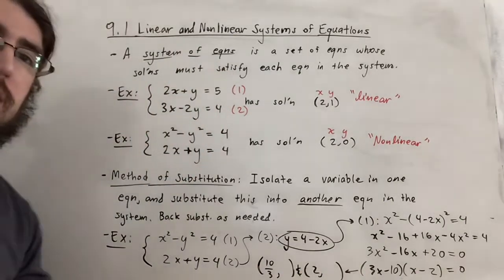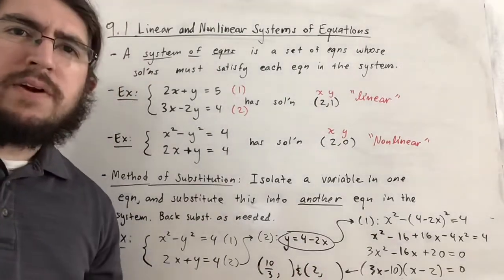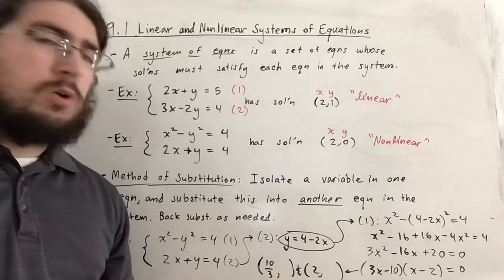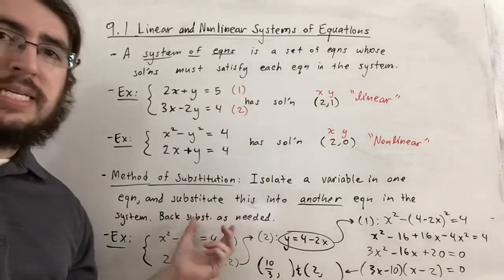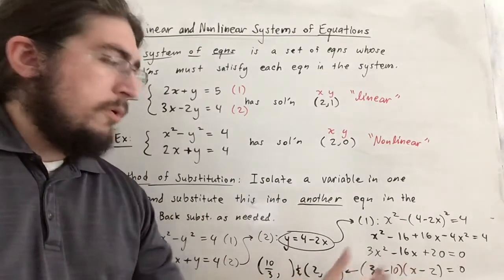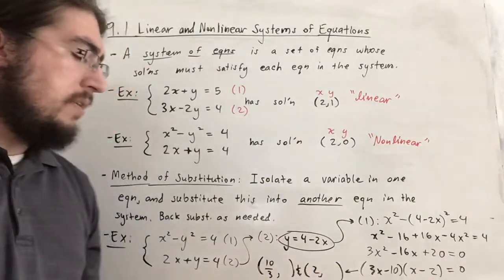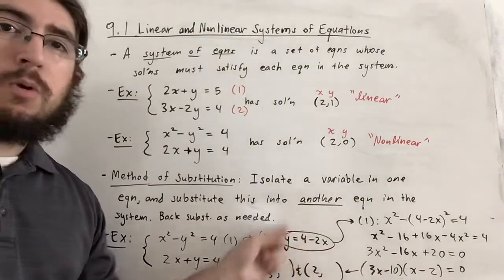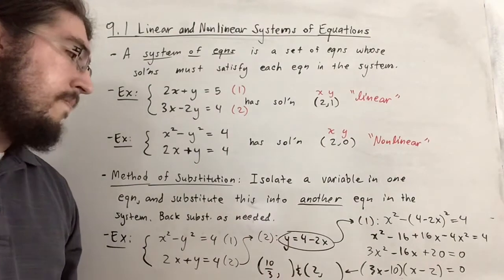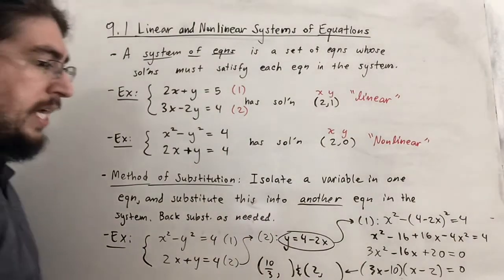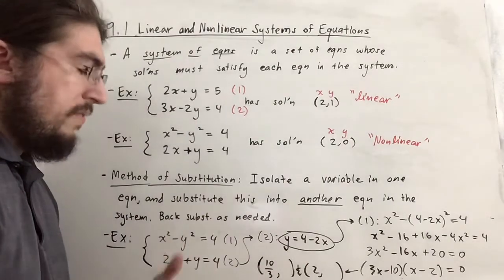I'm writing these as ordered pairs with a blank spot for y. To find the y values corresponding to each x, I need to back substitute. For each x value — x = 10/3 and x = 2 — I'll plug them into the equation y = 4 − 2x. I'll skip some details and allow you to figure them out on your own.